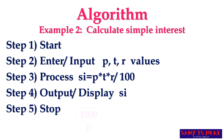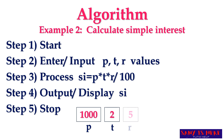Let us visualize this. The P value is input as 1000 - that is the principal amount. T is the time duration given in years, and R is the rate of interest. The machine does the calculation and will show you the output stored in SI, which is 1100. Simple - you've got how to write algorithms.